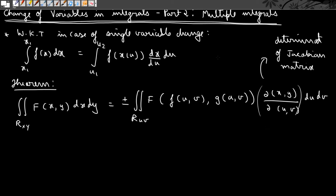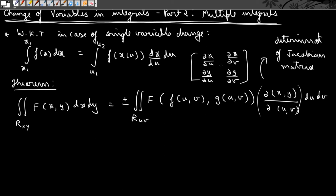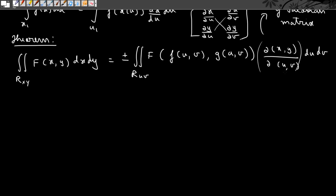The Jacobian matrix in this case will be: the first row is ∂x/∂u and ∂x/∂v, and the second row is ∂y/∂u and ∂y/∂v. So the determinant of this will be ∂x/∂u times ∂y/∂v minus ∂x/∂v times ∂y/∂u — that is how you take the determinant. We are going to prove this, and I will call this equation 1.